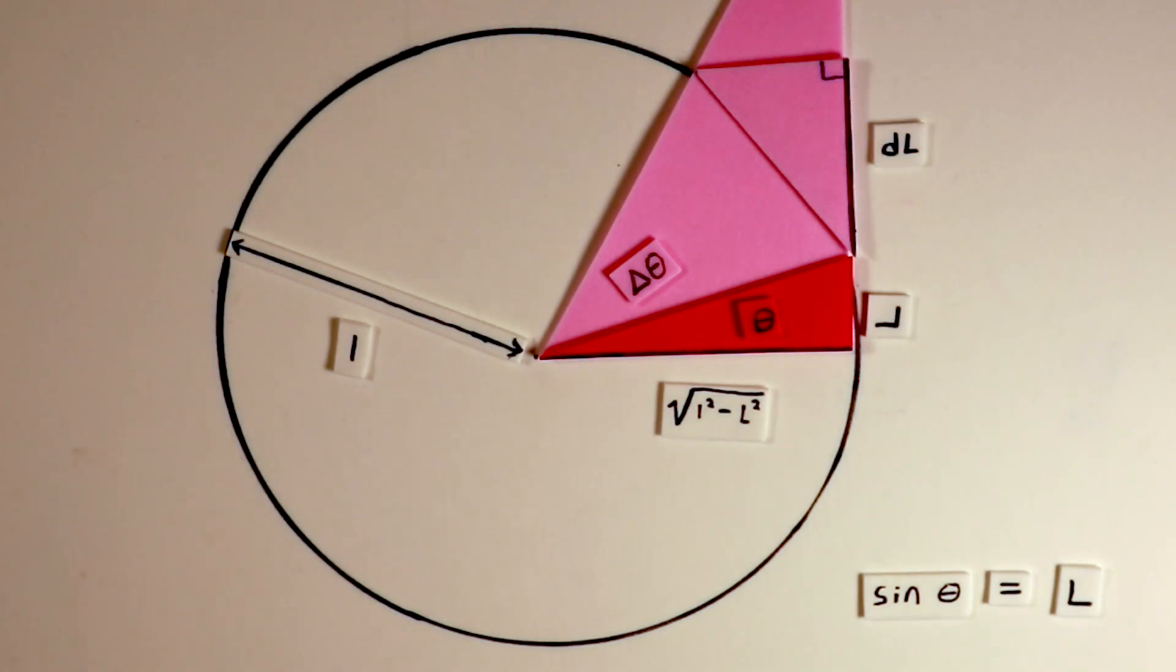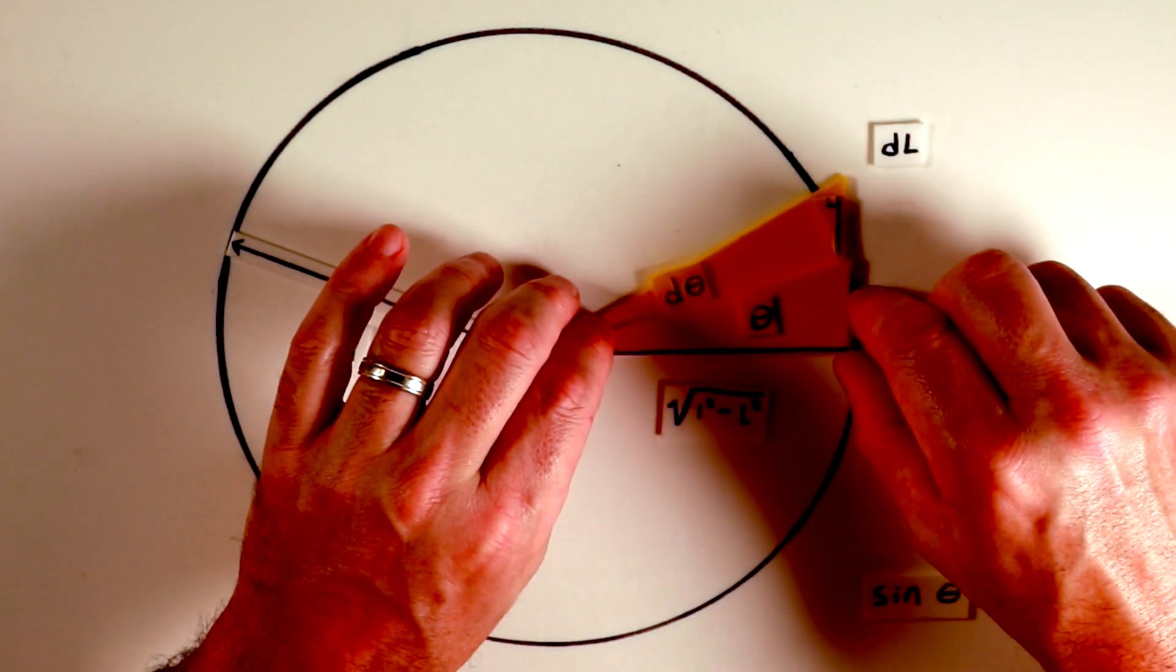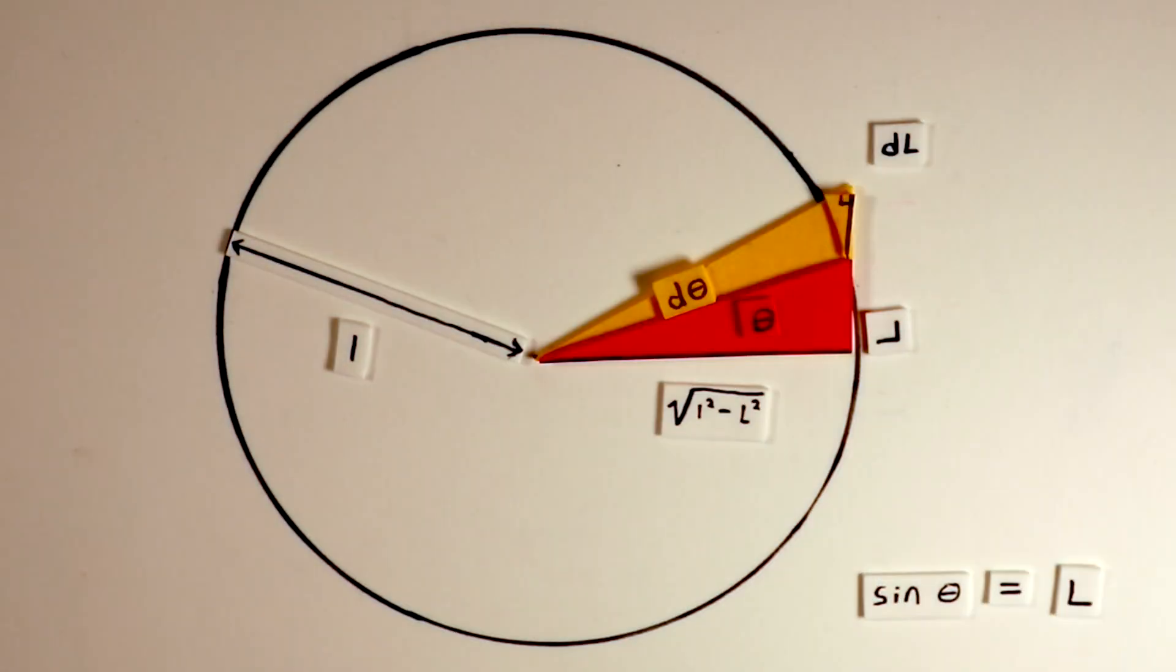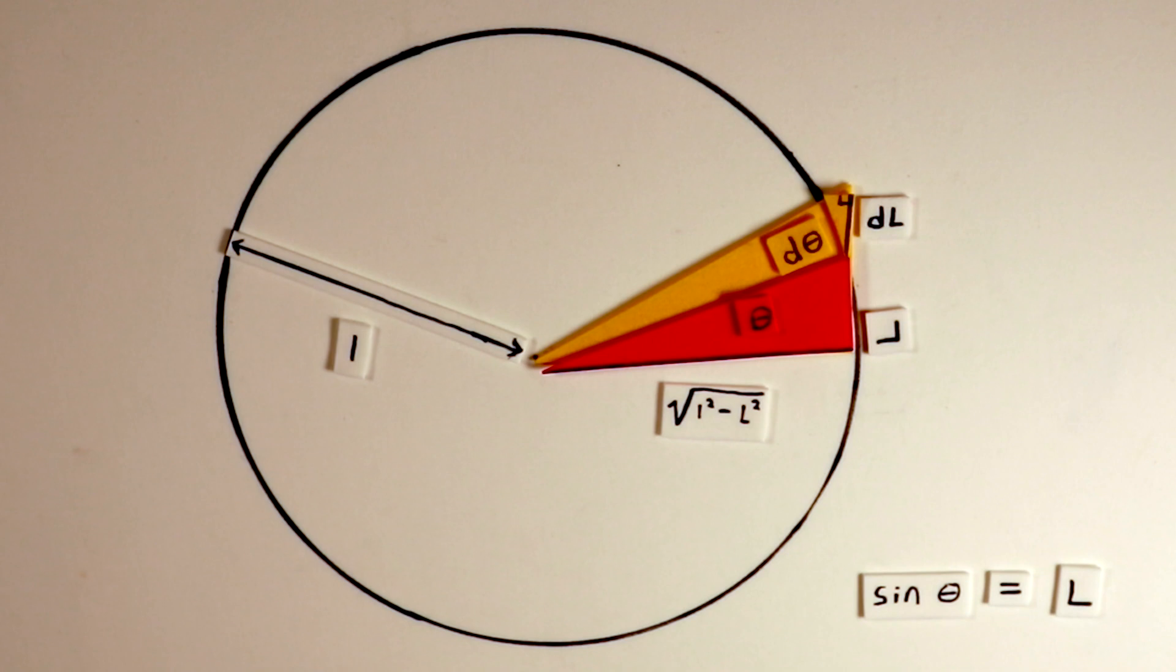As the angle delta theta becomes smaller and smaller, approaching 0, this tiny triangle starts to resemble our initial right triangle more closely. We'll refer to the hypotenuse of this small triangle as D theta because in the limit the arc length approaches the chord. By rotating this small triangle 90 degrees and overlaying it onto the original right triangle, you can see their similarity more clearly.